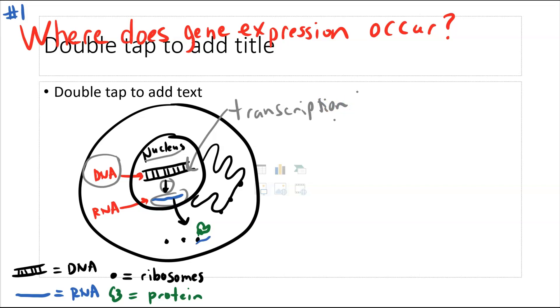So there's transcription. And the second part of gene expression, which is translation, that is converting RNA into proteins. That's indicated by this arrow here. And this protein here is the final product.